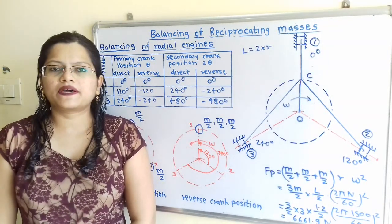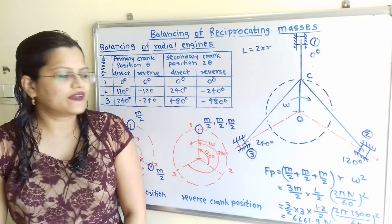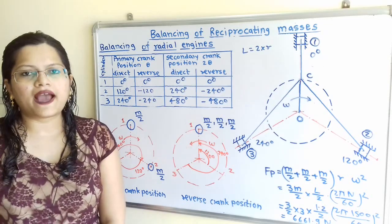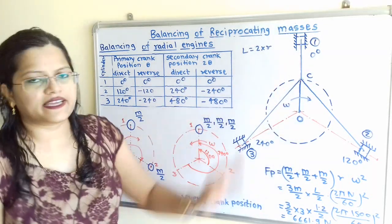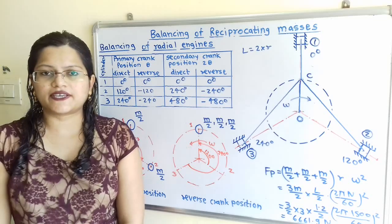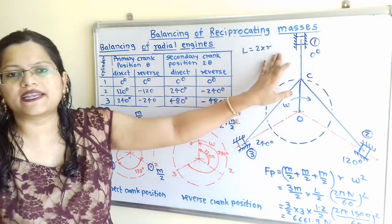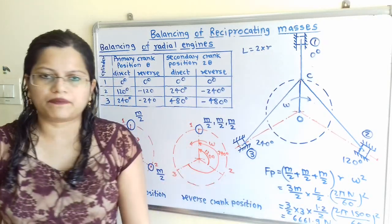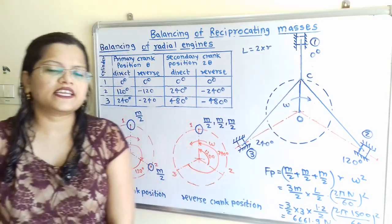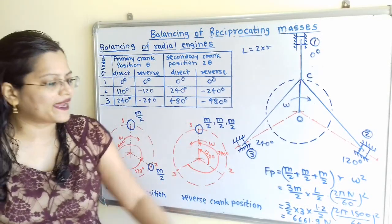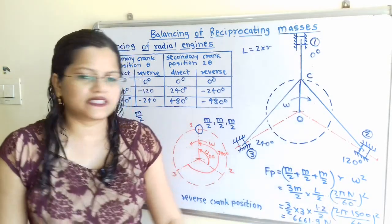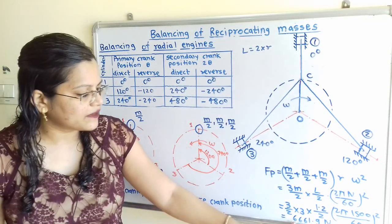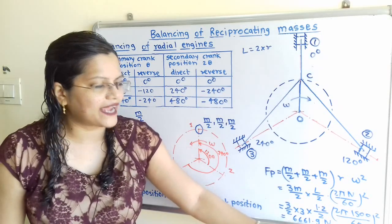Now we calculate the primary unbalanced force. We add all gathered masses: M/2 + M/2 + M/2, multiplied by R and omega squared. Since stroke length L = 2R, we get R = L/2 = 120/2 = 60 mm. Omega is calculated as 2πN/60 where N = 1500 RPM. After computing, the primary unbalanced force is 6661.9 Newtons.